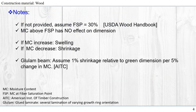Next, we are going to take some notes in the scenario where some data is not given. If FSP is not provided, according to USDA, US Department of Agriculture wood handbook, we can assume FSP is 30%.